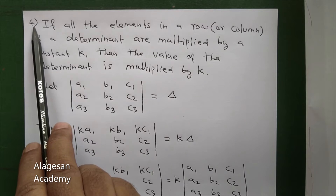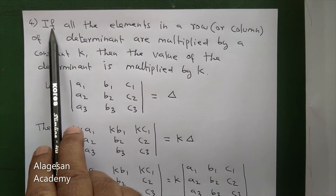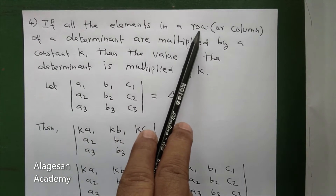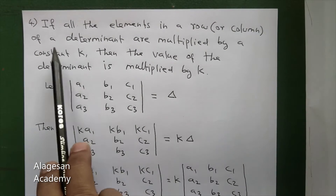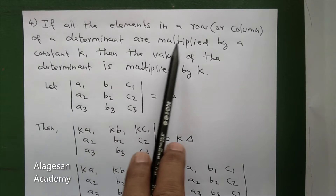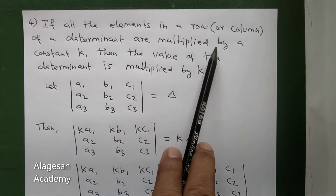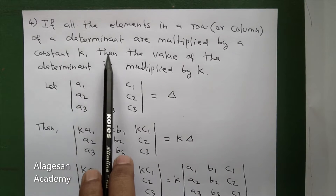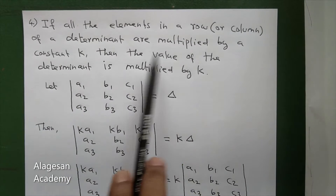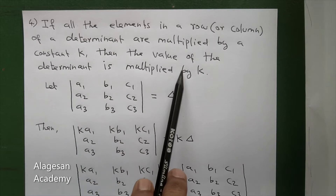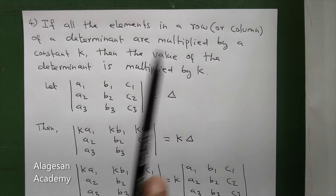See Property 4: if all the elements in a row or column of a determinant are multiplied by a constant k, then the value of the determinant is multiplied by k.